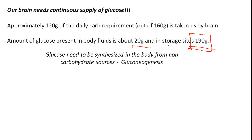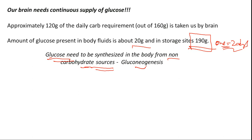That can immediately compensate for one to two days of survival, but that is not enough. So we needed some other resource — glucose needs to be synthesized in the body from non-carbohydrate sources. Carbohydrate sources are glycogen; non-carbohydrate means other than carbohydrates. That is what we call gluconeogenesis. The major site of gluconeogenesis is the liver, with a small amount also taking place in the kidney.